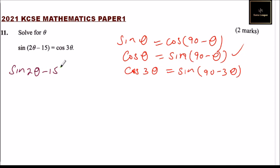Now we write sine(90 - 3θ). So we can now get the sine inverse or just simply cancel that, and therefore we have 2θ - 15 equals 90 - 3θ.